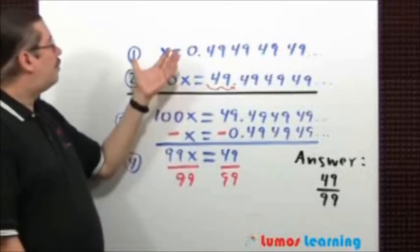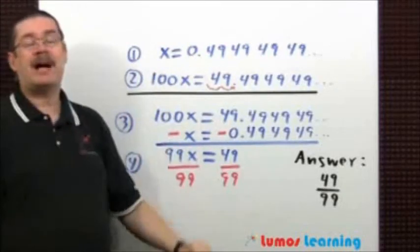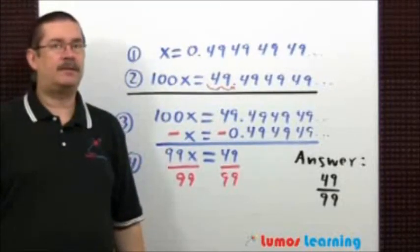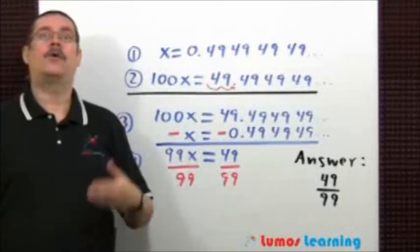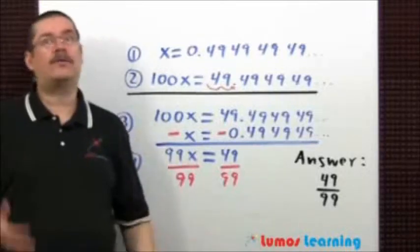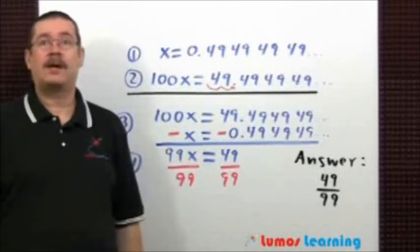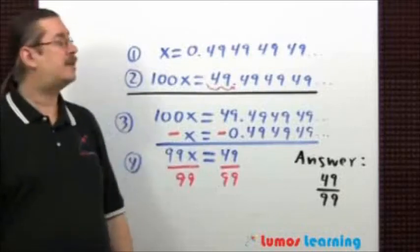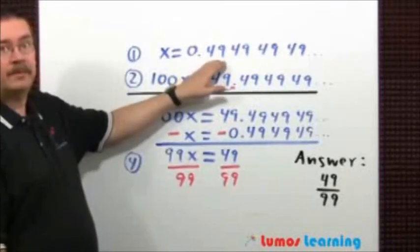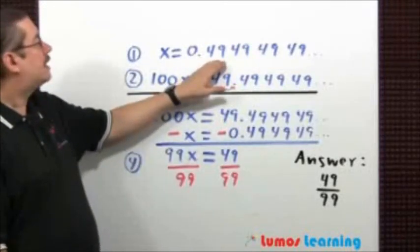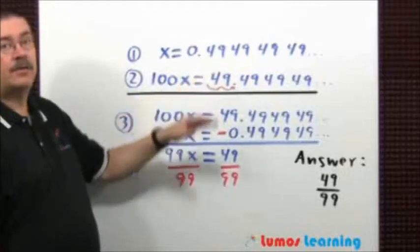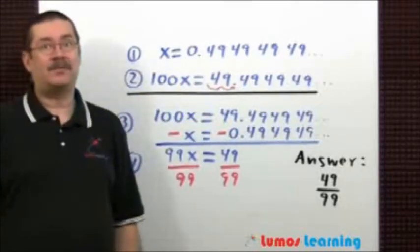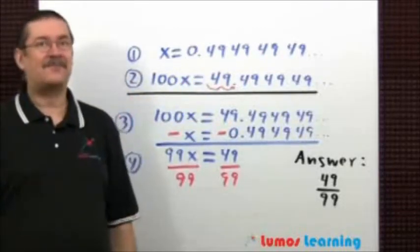Next, multiply both sides of the equation by a power of 10 — which one? It could be either 10, 100, 1000, or 10,000. How do you know which one to use? It depends on how many repeating digits there are in the decimal. In this case, there are two repeating digits, so the number needs to be 100, which has two zeros in it.